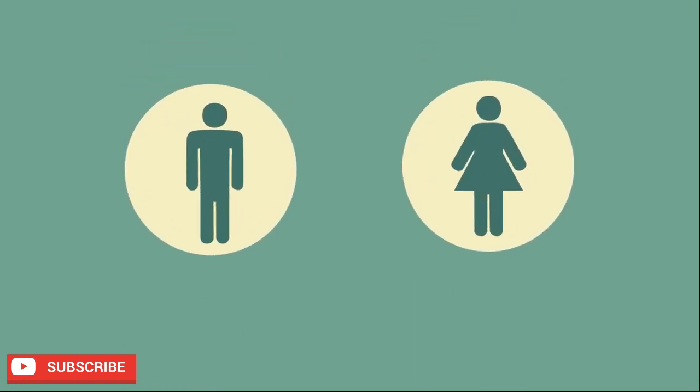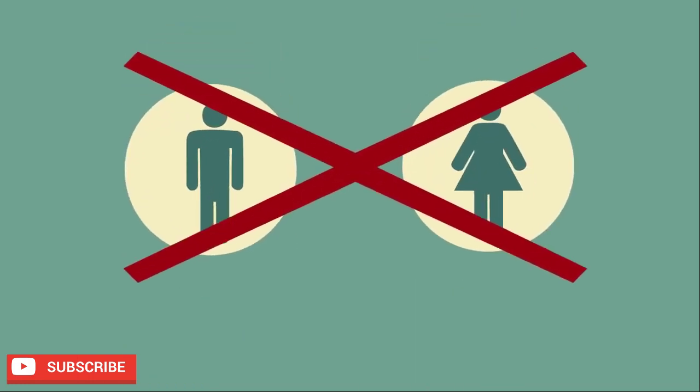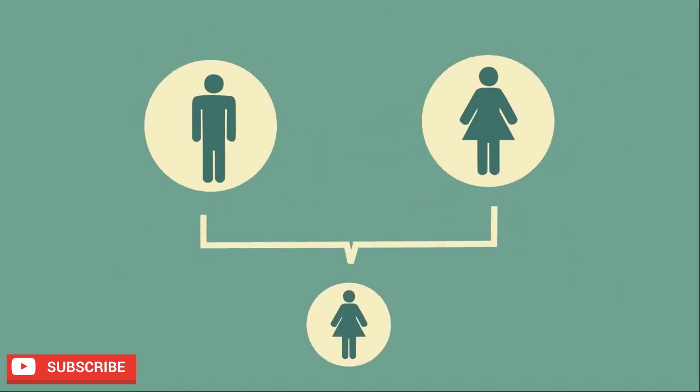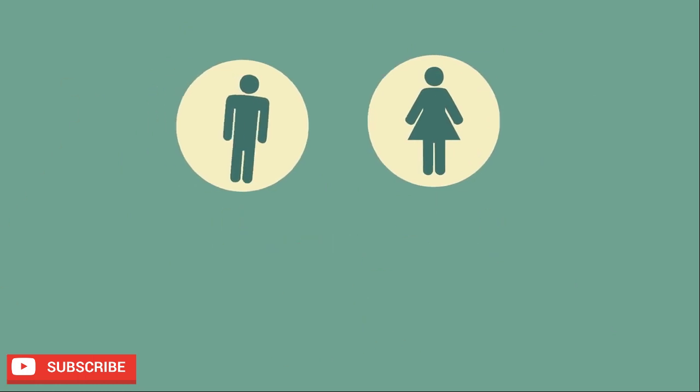Do you agree that every living thing needs two parents to be created? This is actually incorrect. Whilst we are more familiar with sexual reproduction involving two parents, asexual reproduction only needs one parent.